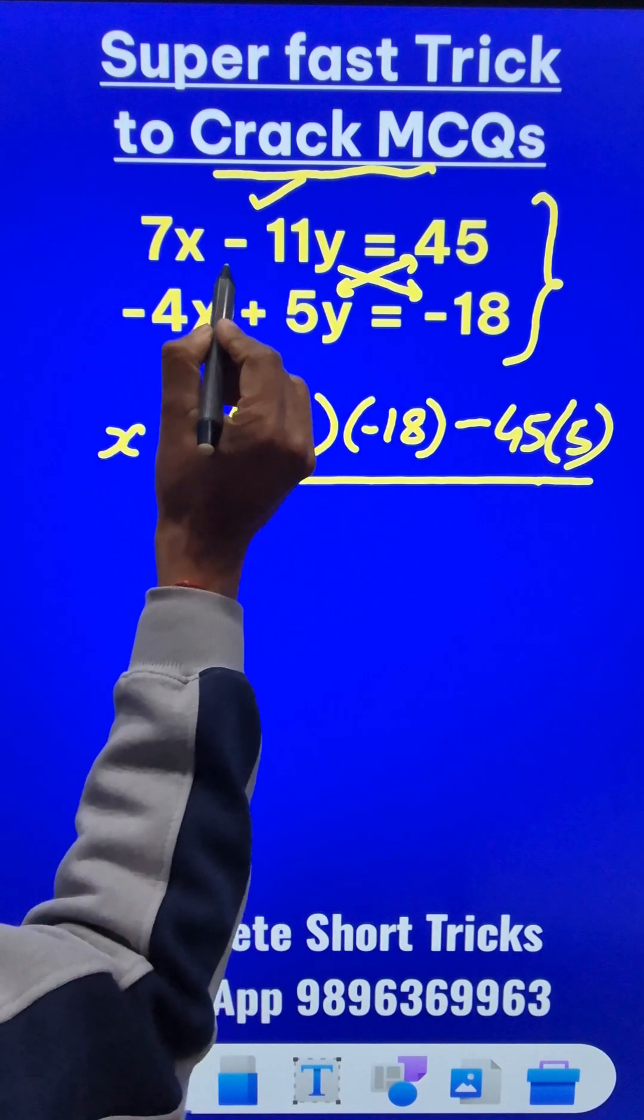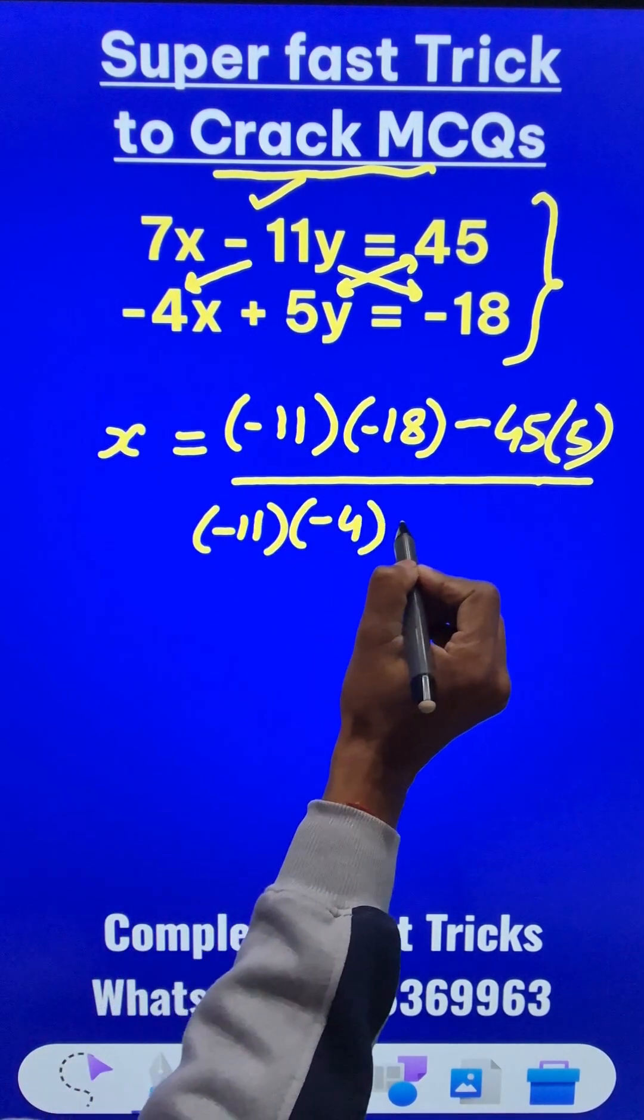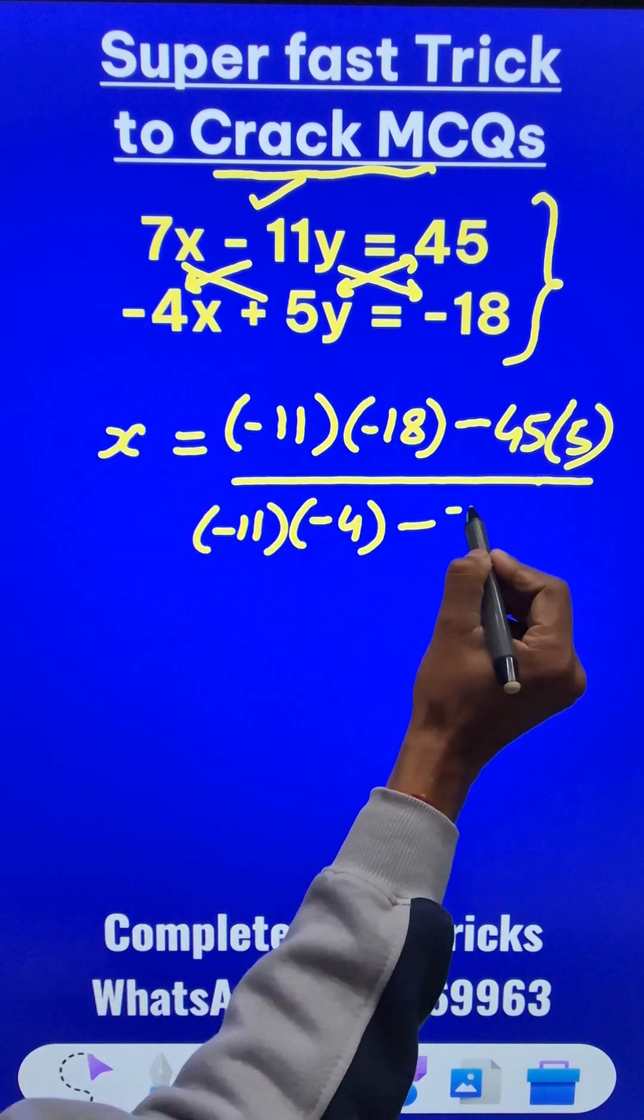Now in the denominator, go across like this from the same number, negative 11, multiply it by negative 4, and then subtract the other way around, 7 times 5.